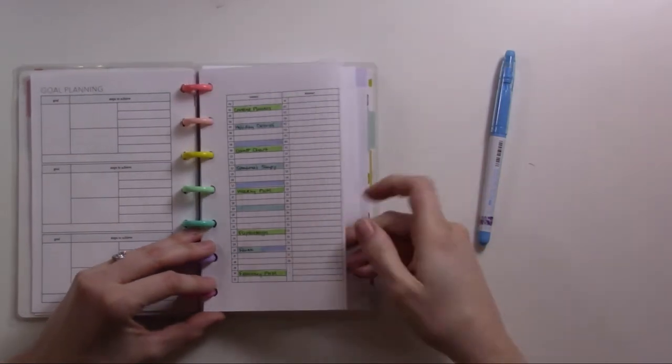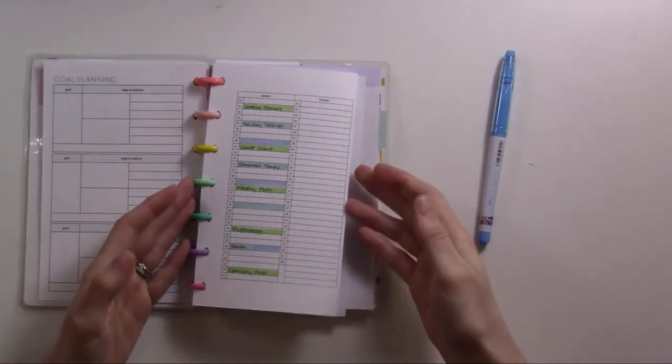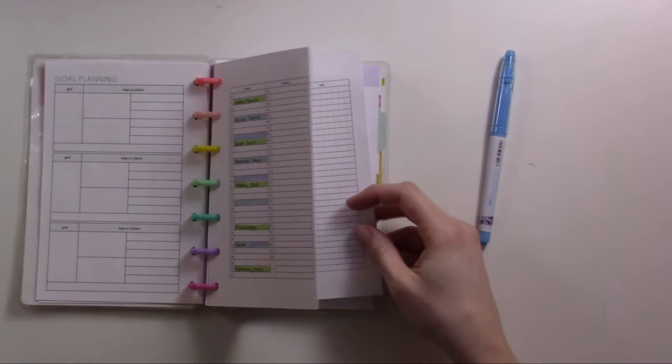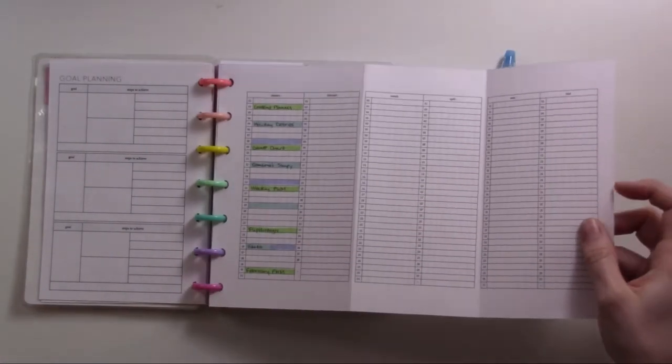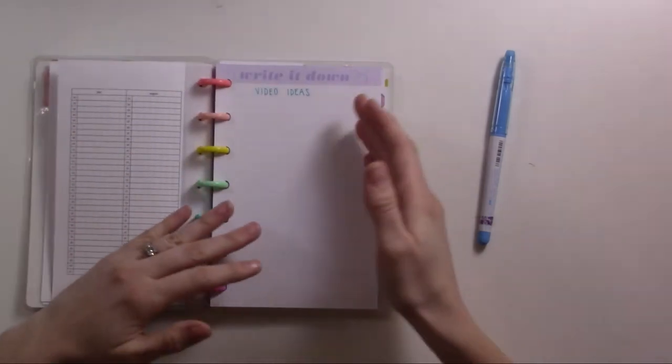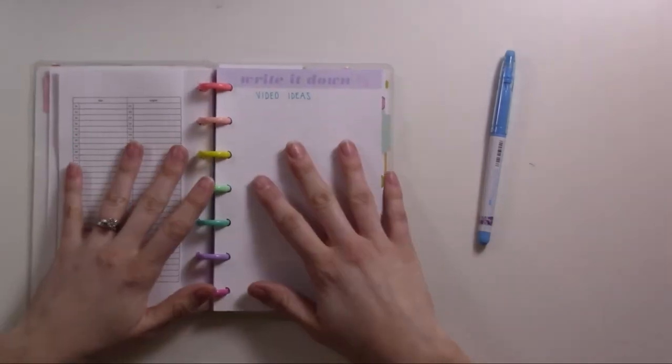And then this one here, last year I had three separate inserts of the 52 weeks insert from Peanuts Planner Co, and that was where I was keeping track of my video and blog topics. Here I decided to put them all on one insert, and this is a fold out from the undated yearly bundle.